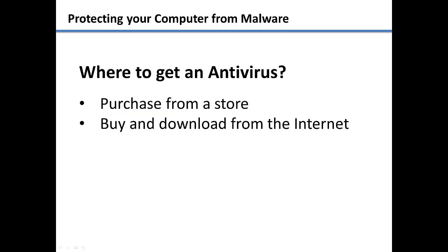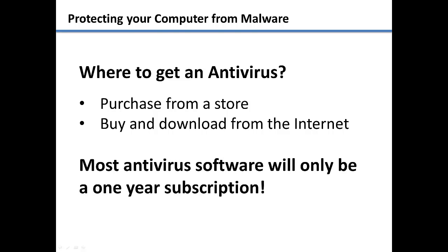So now that you know the do's and don'ts of antivirus software, where do we get one? You can pick up an antivirus software at any store that sells computers. You can also purchase them directly from the internet, then download and install it. If you purchase one from a store or online, you will normally be purchasing a subscription that will end after one year.